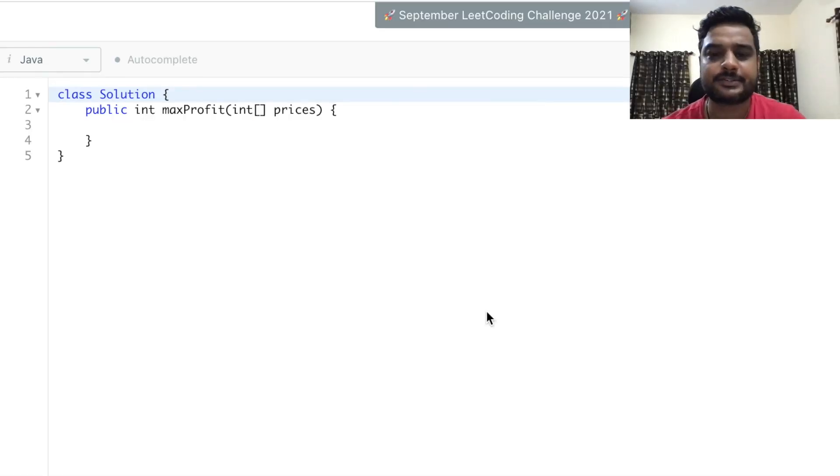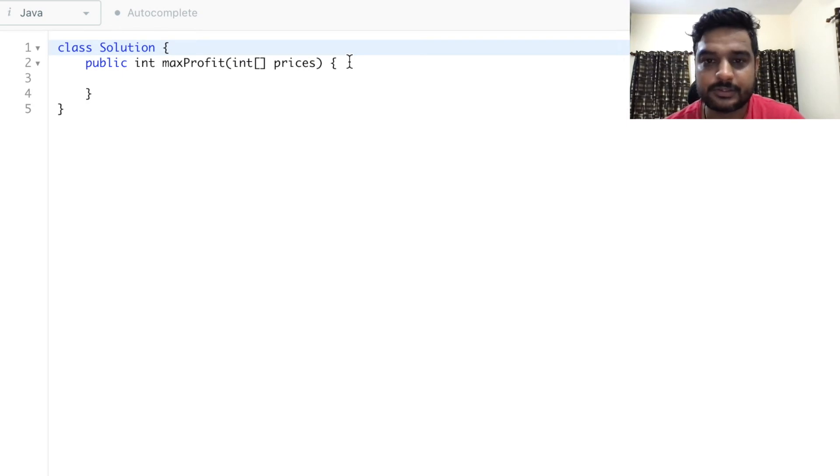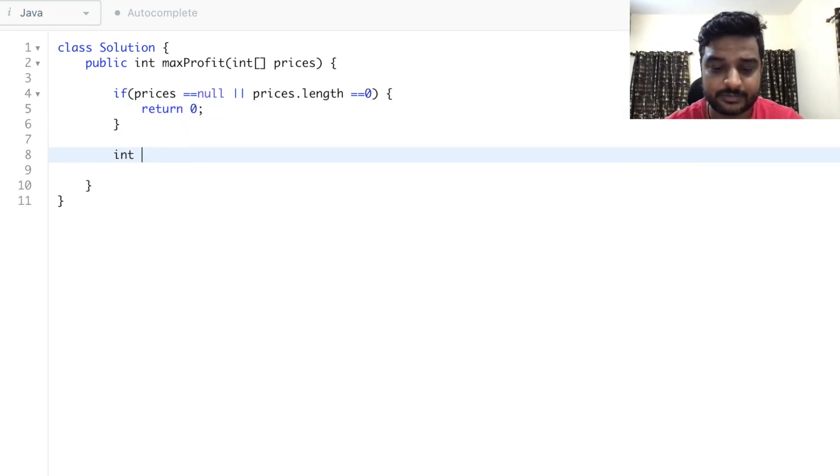Let's write the code. First we'll check if prices is null or if prices.length is equal to 0, then we'll return 0. Otherwise, we'll create an integer maxProfit and initialize it to 0.